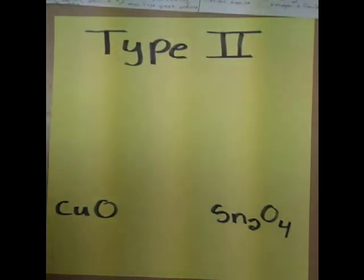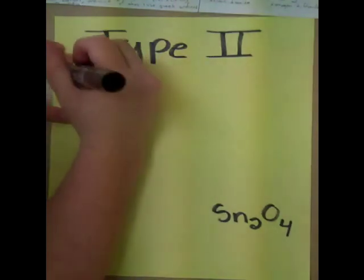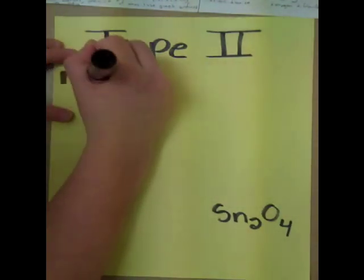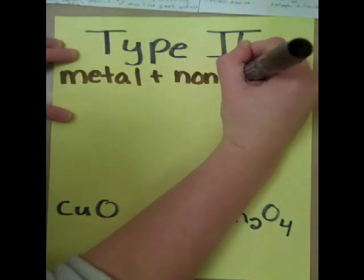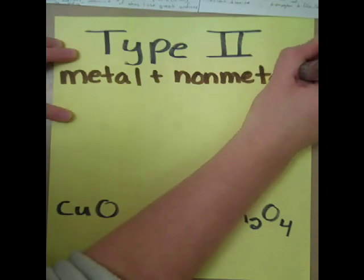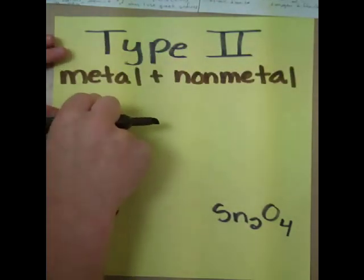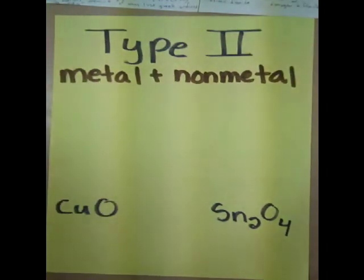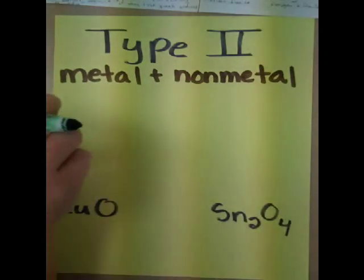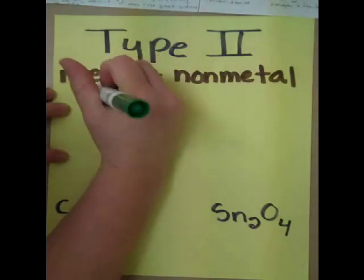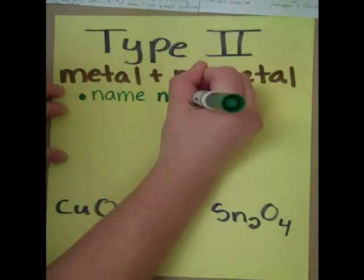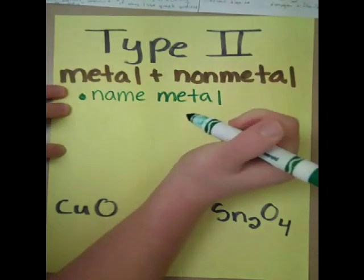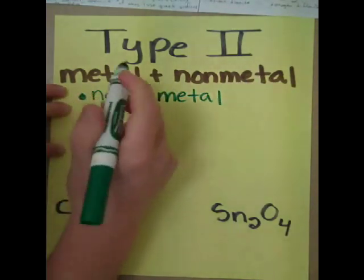So that is type 1. Type 2 is the same thing — metals and non-metals — but they have varying oxidation states in the metal. So to name these, we name our metal, but then we have to determine the oxidation state of that metal.